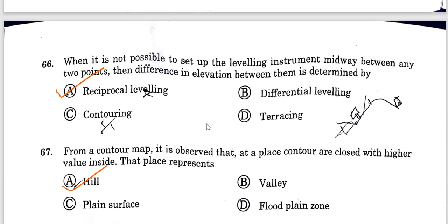Question 66: When it is not possible to set up the leveling instrument midway between any two points, then the difference in elevation between them is determined by reciprocal leveling.